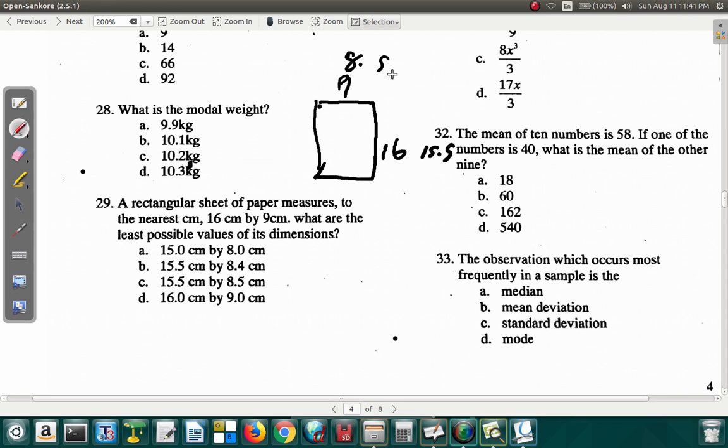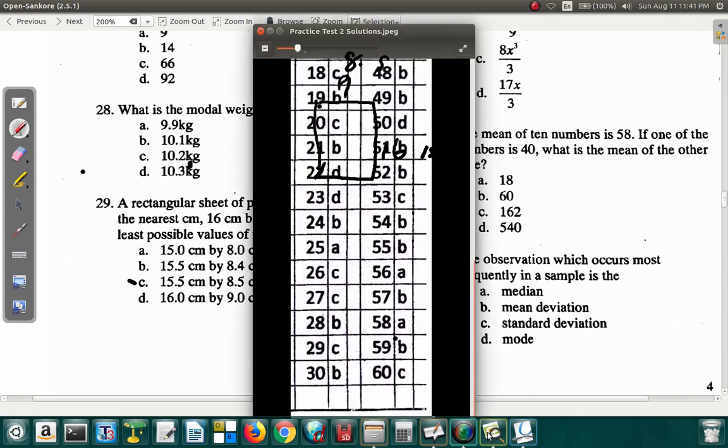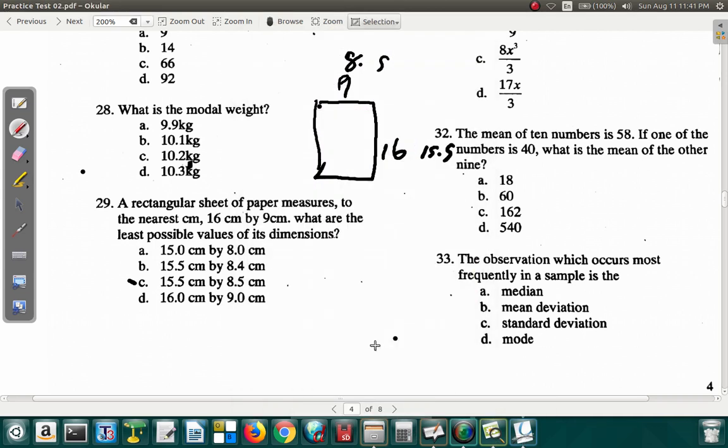So the least dimensions would be 8.5 by 15.5. Let's see, 8.5 by 15.5. It seems as if C is the correct answer here. For 29, C.